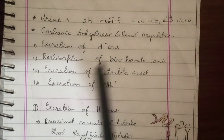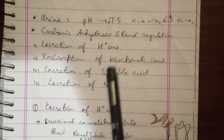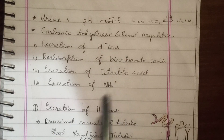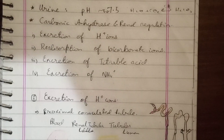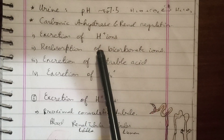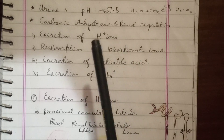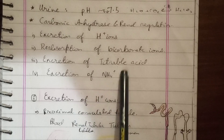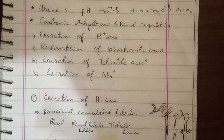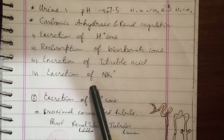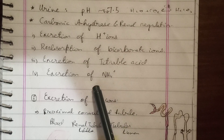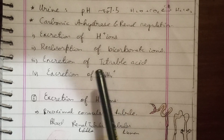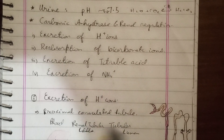Carbonic anhydrase enzyme plays a role in renal regulation and renal mechanisms of pH regulation. There are 4 types of roles: excretion of hydrogen ions (protons), reabsorption of bicarbonate ions, excretion of titrable salts, and excretion of ammonium. In addition, there is absorption of bicarbonate ions.